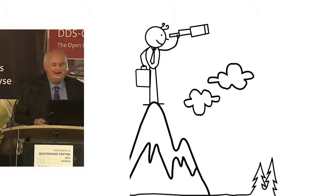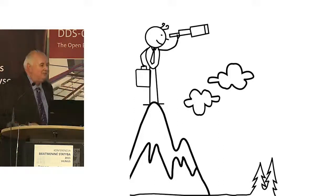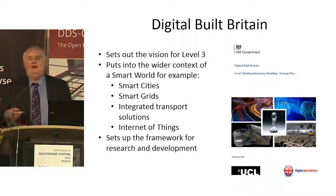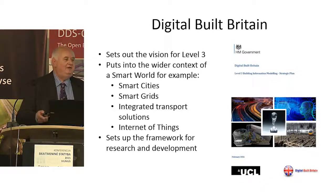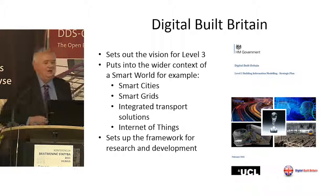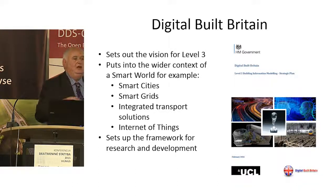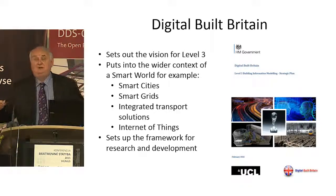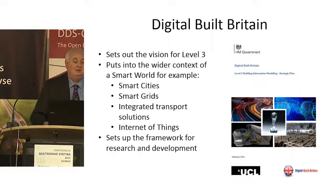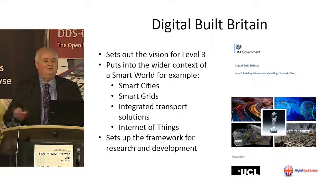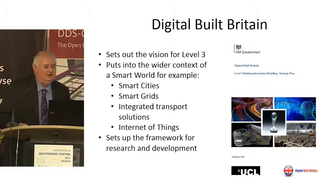One of the things we've studied is what to do about Level 3, because it's much bigger and different than we initially thought. Out of that has come a report called Digital Built Britain, which sets out a vision for Level 3 and puts it into the wider context of a smart world — smart cities, smart grids of power and water that respond to needs, integrated transport solutions, and the internet of things with transponders that respond to us. It sets up a framework for research and development to take that forward.